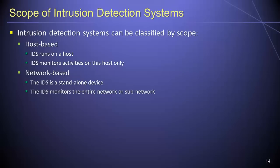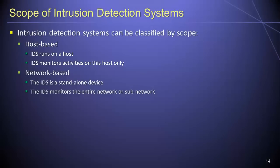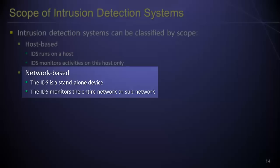One way of classifying intrusion detection systems is by considering their scope. Broadly speaking, intrusion detection systems can be classified either as host-based systems or as network-based systems. A host-based intrusion detection system runs on a host on the network and is responsible only for monitoring activities on that host. By contrast, a network-based intrusion detection system is an independent, stand-alone device connected to the network that monitors activities on an entire network or subnet.